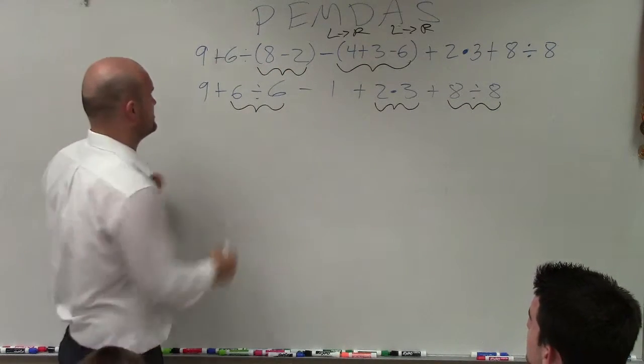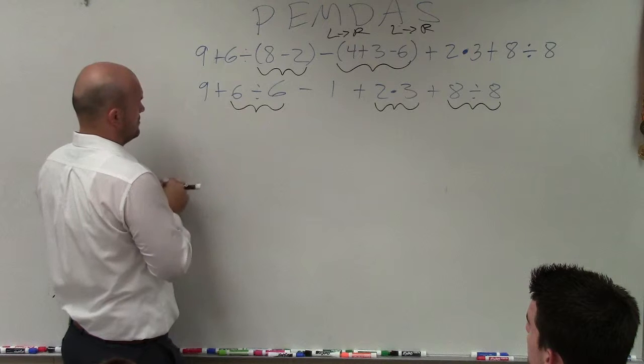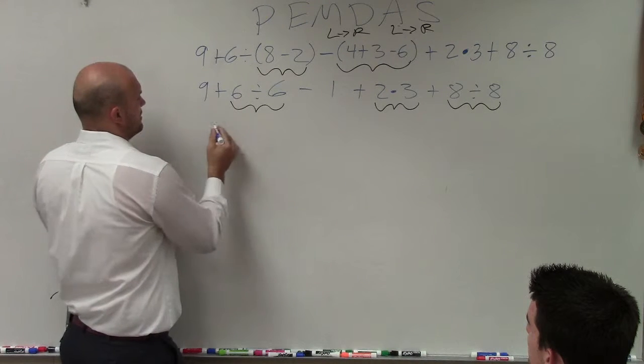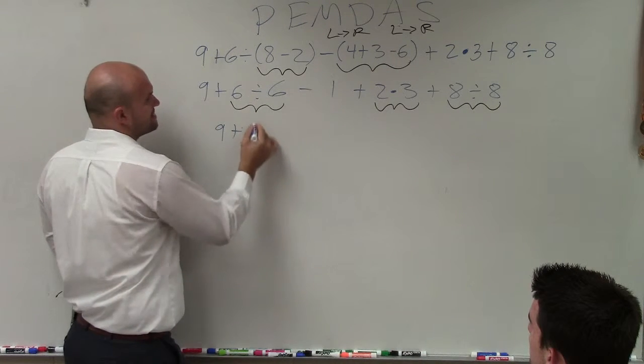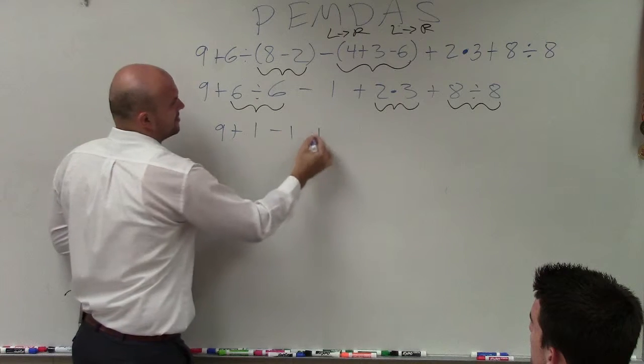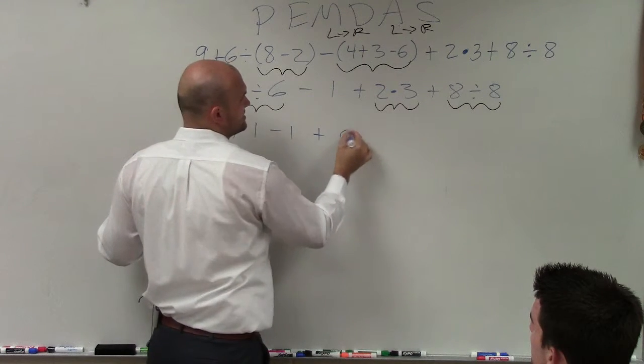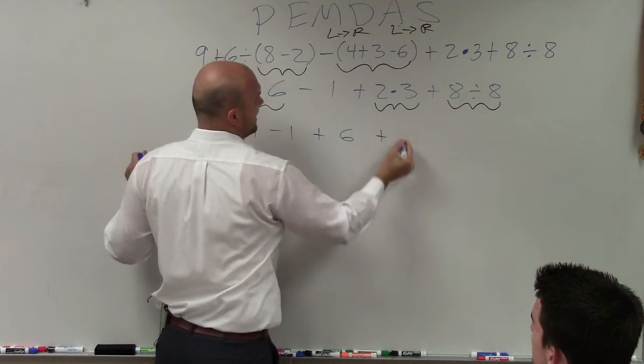And again, you just go from left to right. So I have 9 plus 6 divided by 6 is 1, minus 1, plus 2 times 3 is 6, plus 8 divided by 8 is 1.